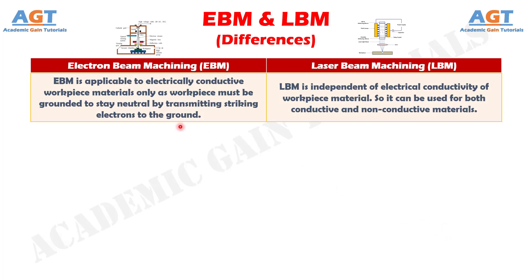Difference number 6: Electron beam machining is applicable to electrically conductive workpiece materials only, as the workpiece must be grounded to stay neutral by transmitting striking electrons to the ground, whereas laser beam machining is independent of the electrical conductivity of the workpiece material. So it can be used for both conductive and non-conductive materials.